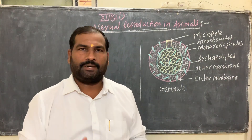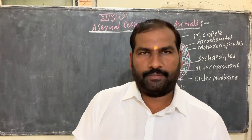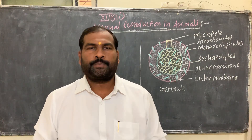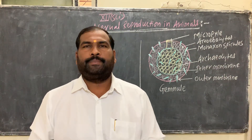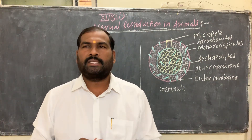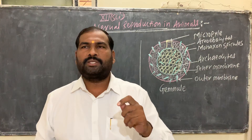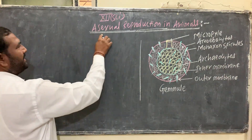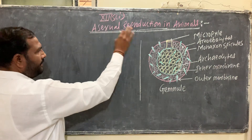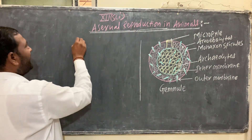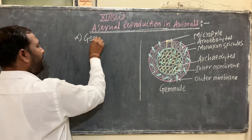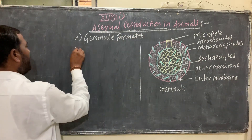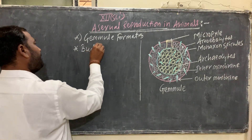Students, we have studied the difference between sexual reproduction and asexual reproduction. Now we have to study how lower animals reproduce asexually. Lower animals reproduce asexually by gemmule formation and budding. So asexual reproduction in animals means that animals reproduce asexually — first by gemmule formation, and the second one is budding.